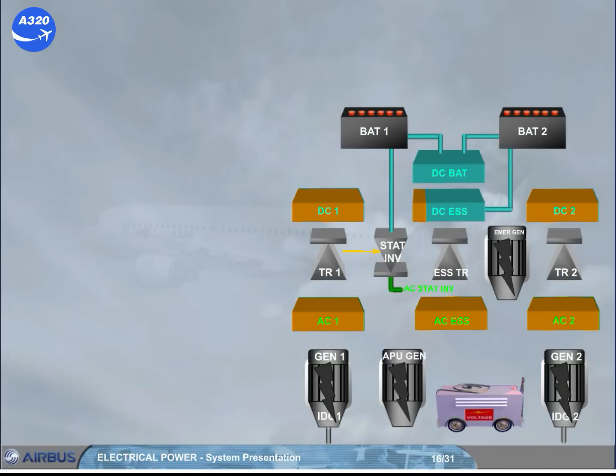In flight, it supplies also partially the AC essential bus, and battery 2 partially the DC essential bus. But the DC BAT bus is not supplied.